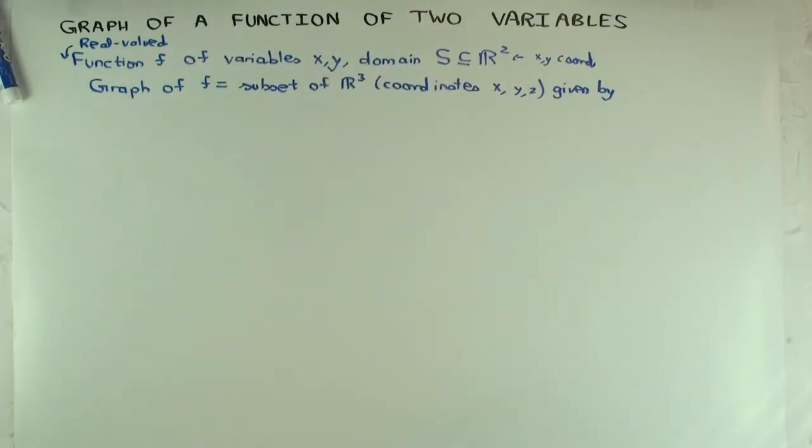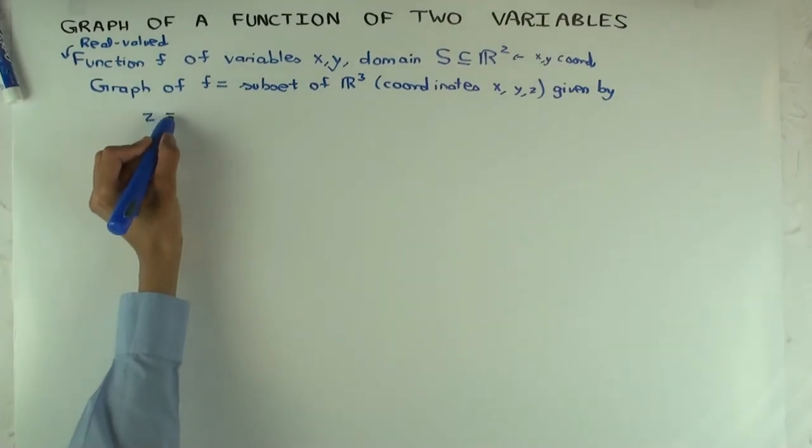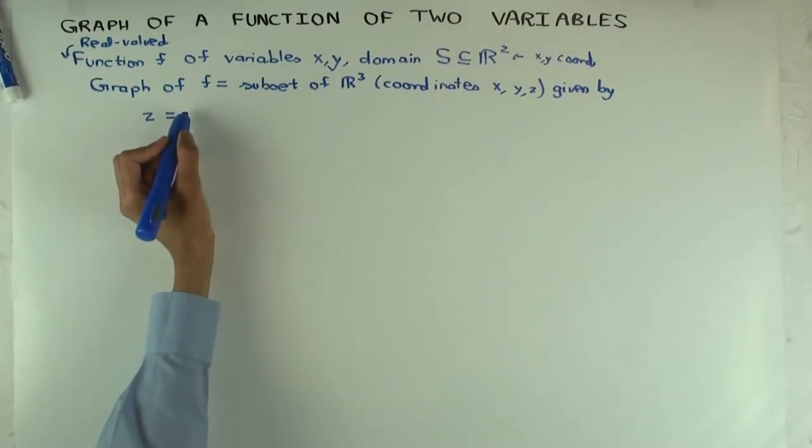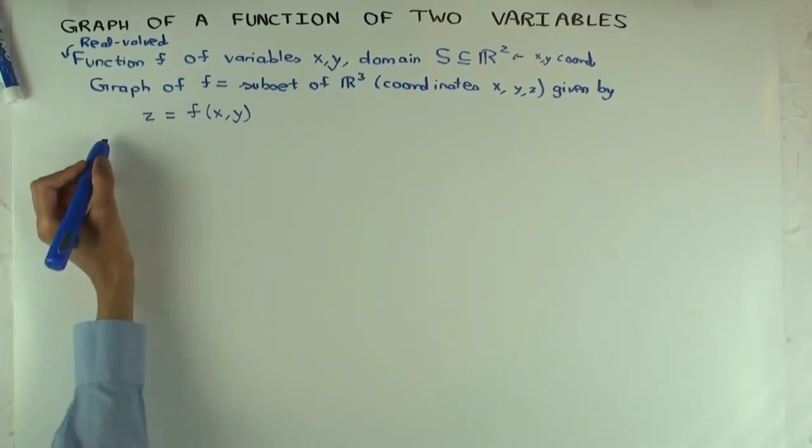And it's given by a certain equation. Now what do you think the equation should be? z equals what? f of x comma y—great, so that's the definition of the graph.